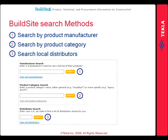As you can see, BuildSite.com offers three easy search methods: first by product manufacturer, second by product category, and third by local distributors.